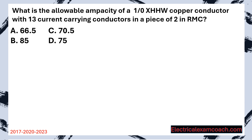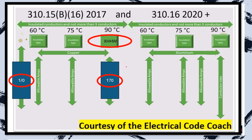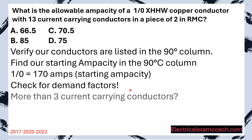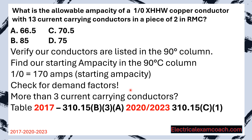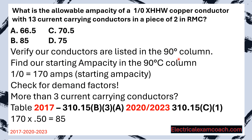Practice question: What is the allowable ampacity of a 1-0 XHHW copper conductor with 13 current carrying conductors in a piece of 2-inch RMC? Step one: verify XHHW is listed in the 90°C column — it is. Step two: on the copper side of the primary ampacity table, find 1-0 and cross to the 90°C column — starting ampacity is 170 amps. Step three: more than three current carrying conductors, so apply the adjustment factor from the table — 50%. Taking 170 amps multiplied by 0.50 gives a new reduced ampacity of 85 amps.